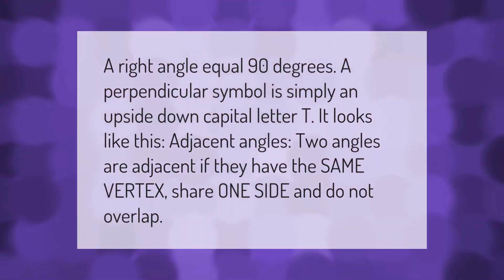A right angle equals 90 degrees. A perpendicular symbol is simply an upside down capital letter T. It looks like this. Adjacent angles: two angles are adjacent if they have the same vertex, share one side, and do not overlap.